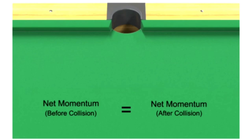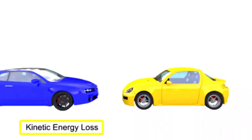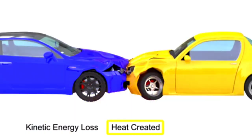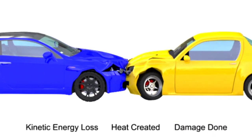The second type of collision is an inelastic collision. In an inelastic collision, momentum is still conserved, but kinetic energy is lost in the system, resulting in the creation of heat and damage done to the colliding bodies. Bodies that are involved in an inelastic collision end up entangled with each other or stuck together.